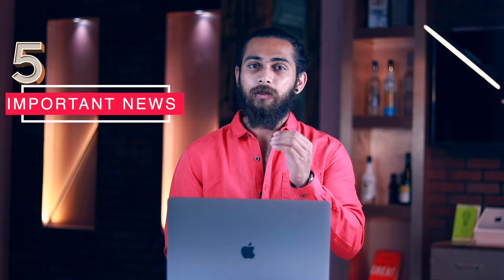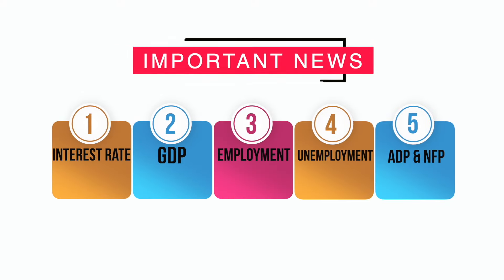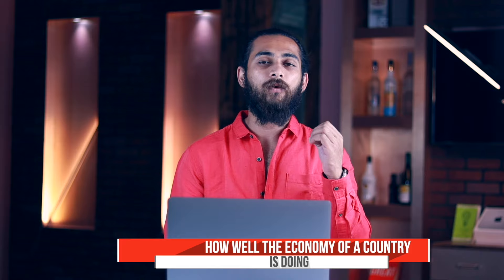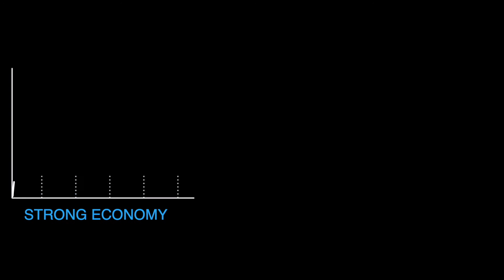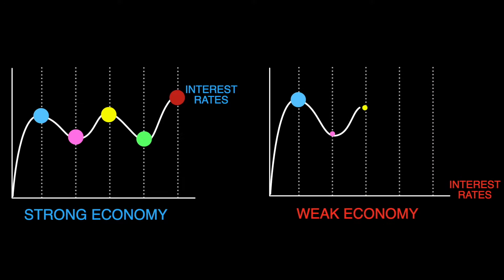There are different types of news, but I consider five to be very important: interest rate, GDP, employment, unemployment, ADP, and NFP. These news events perfectly represent how well the economy of a country is doing, which helps us analyze how a currency pair may look in the future. For example, when interest rates go up, that tells us a country's economy is booming, and if interest rates go down, that tells us the economy is getting weaker.